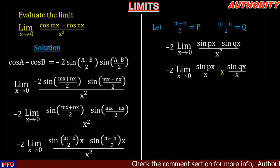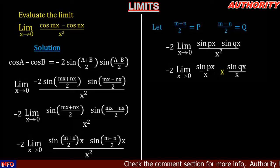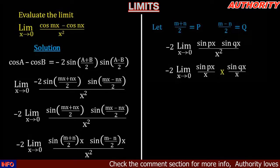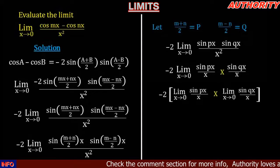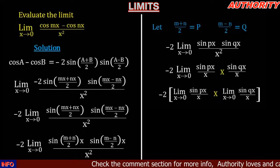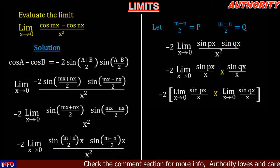This is still the same as minus two times the limit as x approaches zero of sin(px) all over x, times sin(qx) all over x — numerator times numerator and denominator times denominator. This equals minus two times the limit as x approaches zero of sin(px)/x, times the limit as x approaches zero of sin(qx)/x. We know that the limit as x approaches zero of sin(x)/x equals one.